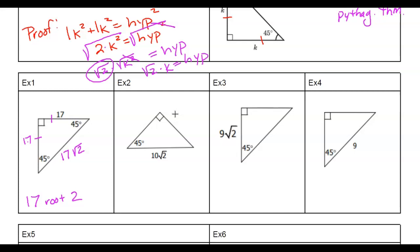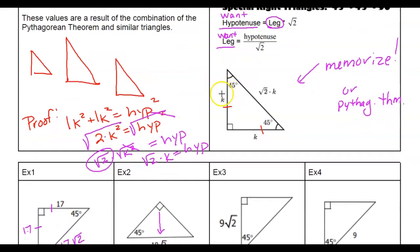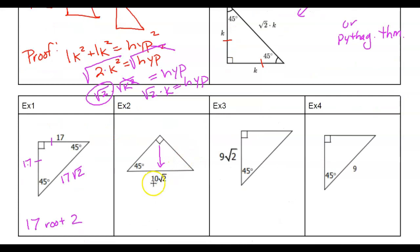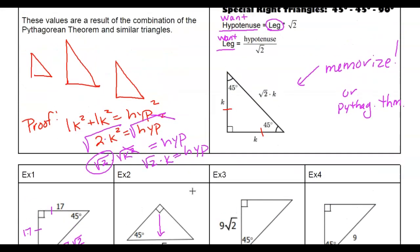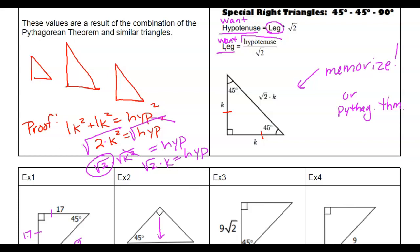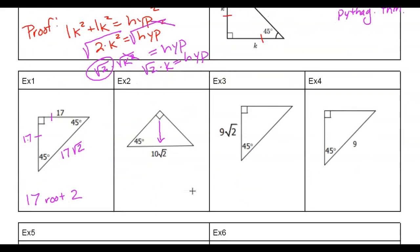Let's look at example two. Now notice we have the hypotenuse. Our rules say we know it's going to be something root 2, and our hypotenuse is 10 root 2. If we want the leg, we take the hypotenuse and divide it by root 2. So 10 root 2 divided by root 2 — these are being multiplied so we can reduce and we just get 10. So the legs are 10, 10, and hypotenuse 10 root 2.